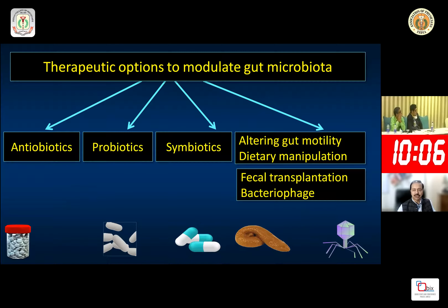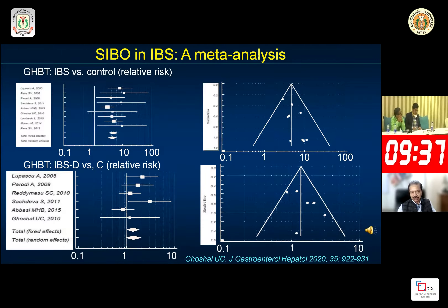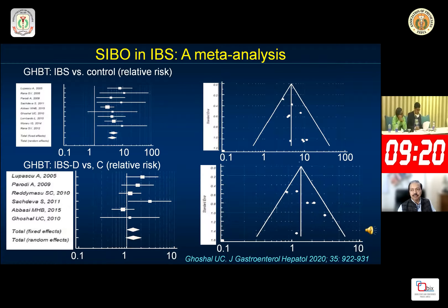Treatment of SIBO can include antibiotics, probiotics, symbiotics, and altering gut motility. Regarding antibiotics, neomycin, norfloxacin, and rifaximin have all been used, but rifaximin is better. The chance of response to antibiotic treatment relates to how common SIBO is among IBS patients. The frequency of SIBO among IBS patients is about 20 to 30 percent — meaning 20 to 30 percent of IBS patients will have small intestinal bacterial overgrowth.